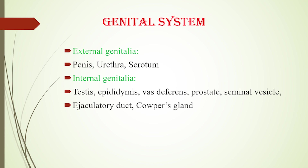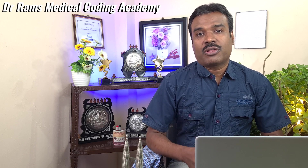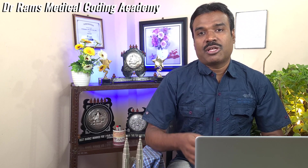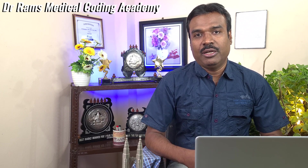On top of each testis is the storehouse of sperm cells called the epididymis, which acts as a reservoir where mature sperm cells are stored. Sperm from the epididymis then enters the vas deferens, which joins with the seminal vesicle. The duct from the seminal vesicle and the vas deferens join to form the ejaculatory duct, which then joins with the urethra — this is where the urinary and genital systems share a common pathway. There is also the prostate gland surrounding the urethra, whose enlargement can lead to urinary disturbances, and the Cowper's glands, which secrete a lubricating fluid.